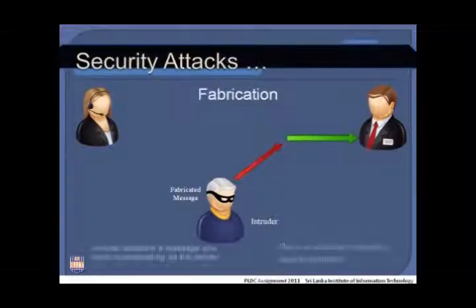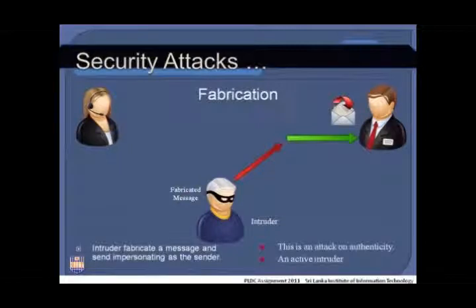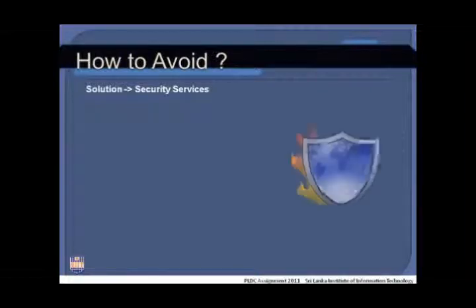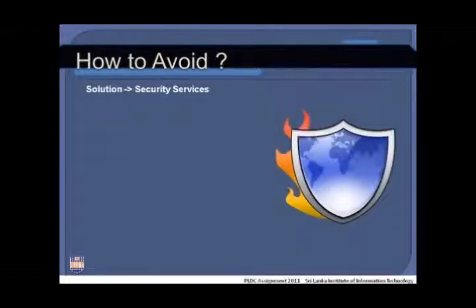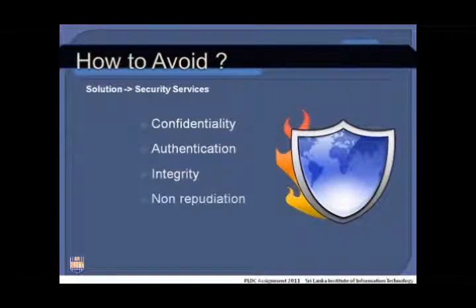In fabrication, the intruder fabricates a message and sends it pretending to be the sender. This is an attack on authenticity, and an active intruder is responsible. The solution to these attacks is security services. There are six types: confidentiality, authentication, integrity, non-repudiation, availability, and access control.